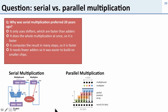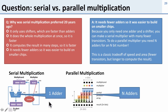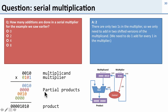So a question: serial versus parallel multiplication — why did we prefer to do serial multiplication 20 years ago? Well the reason we preferred it is it needed fewer adders, so it was easier to fit on a smaller chip. We only had one adder for serial multiplication but in parallel multiplication we had to have a whole bunch of adders. So how many additions were done in the serial multiplication example we saw earlier? Remember we went through this loop many times. Well the answer is two — we need to do two additions because there are only two values with a 1. We needed to add in this part and this part; these zeros we just didn't do an add as we shifted through, because we checked the least significant bit as we shifted.